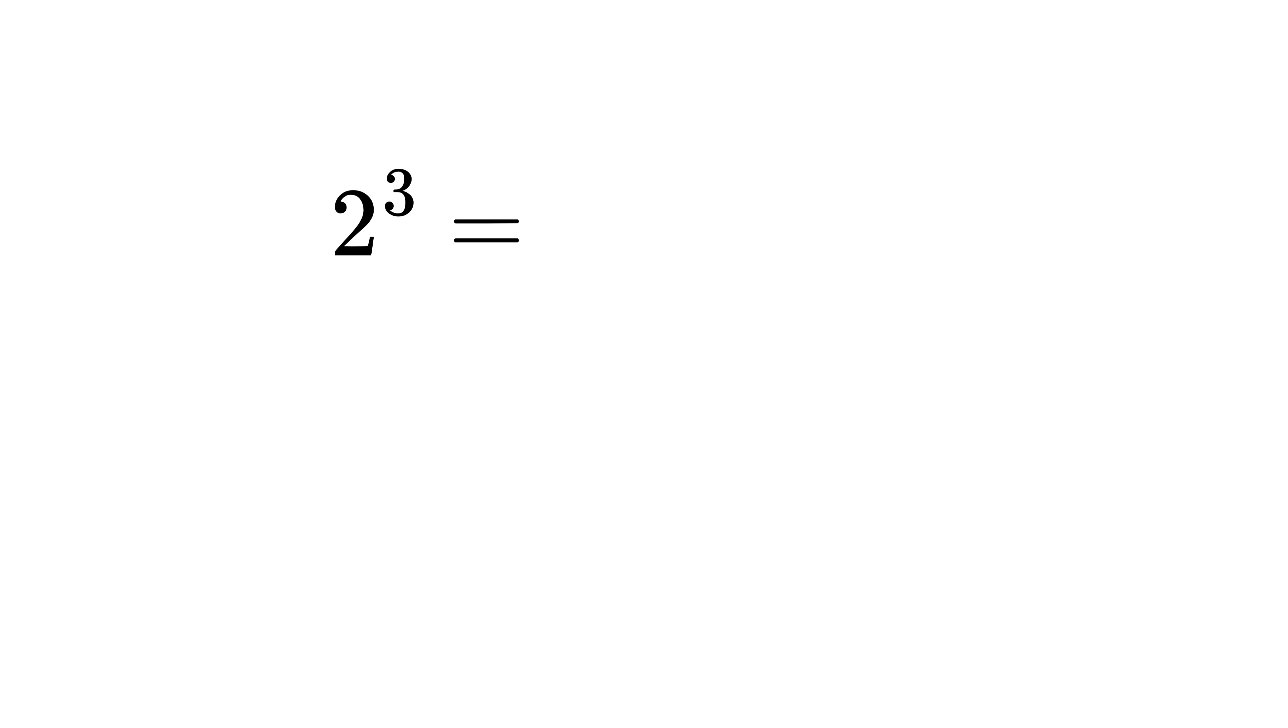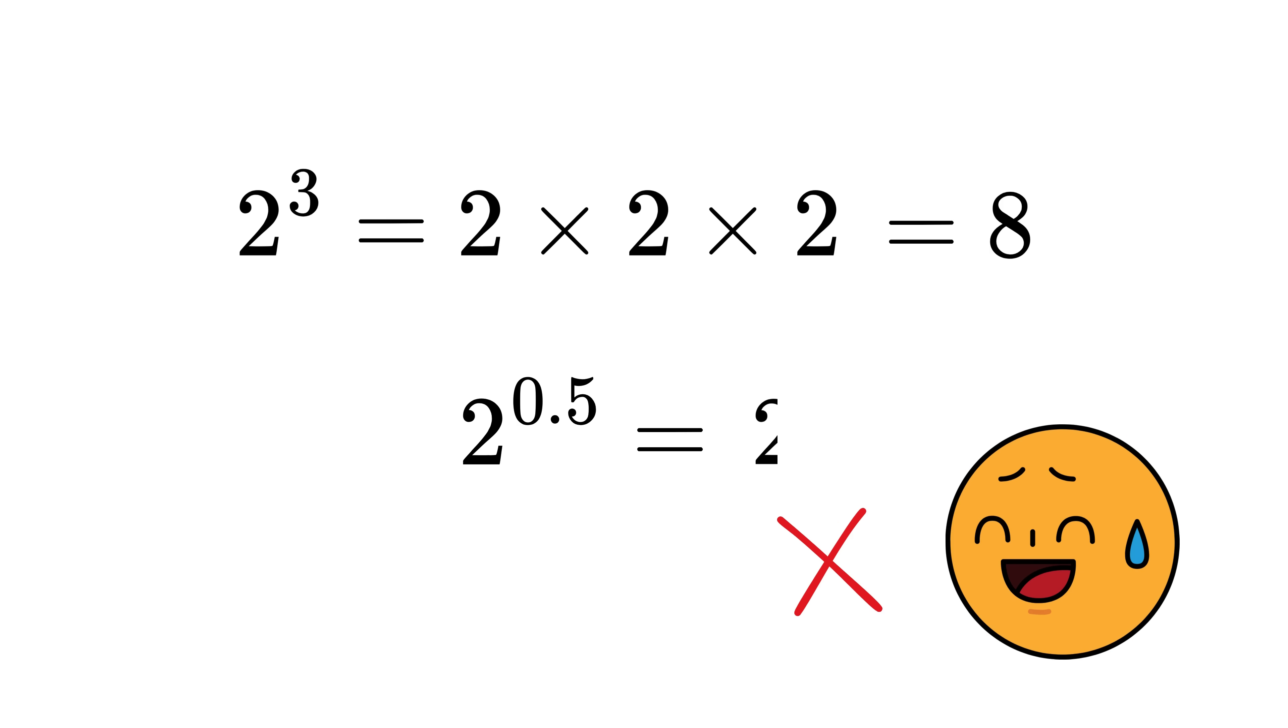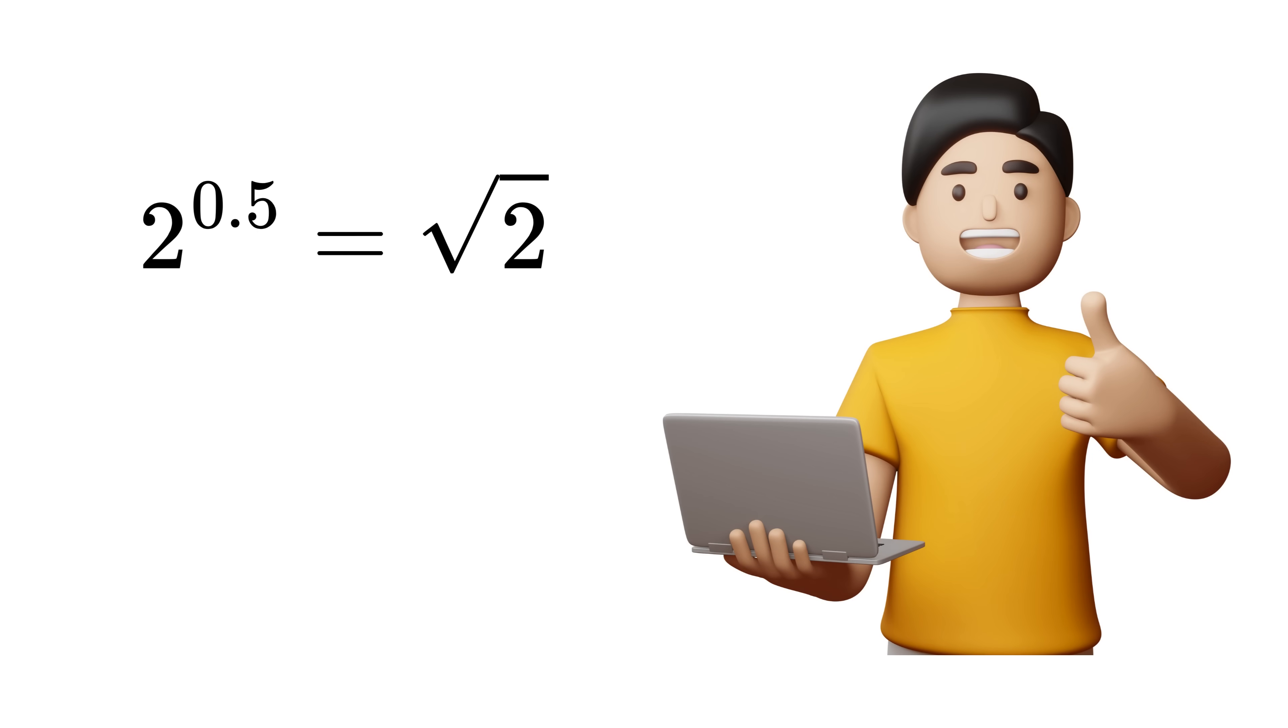Like 2 raised to the power 3 means 2 times 2 times 2, which is 8, just like how factorial is multiplying down whole numbers. But then we ask, what about 2 raised to the power 0.5? That's not 2 multiplied by itself half a time, right? And yet we know that 2 raised to the power 0.5 means the square root of 2, and we don't feel that weird about it.